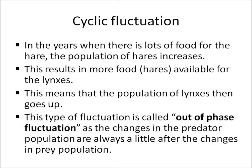We can also see that the population goes up and then it goes down and then it goes up and it goes down. This fluctuation we can therefore say is cyclical or cyclic. So we've got cyclic fluctuation, and we can explain that.